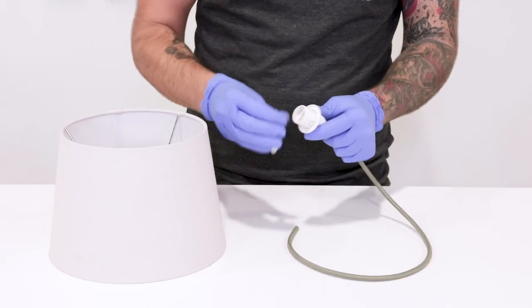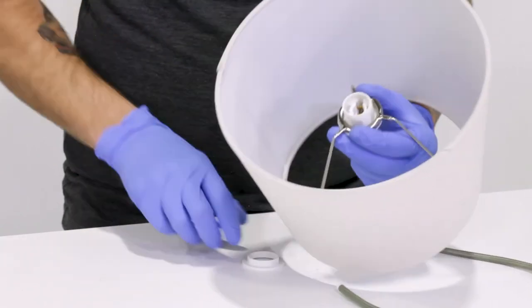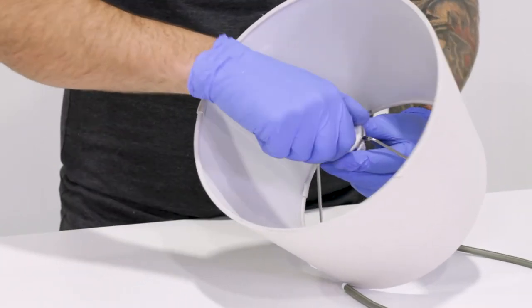Use two rings with the extended threads to give you full range of where the socket sits in the shade and you get sandwiched support from both sides.